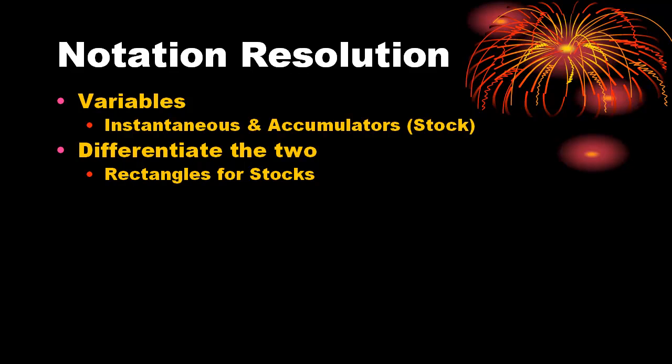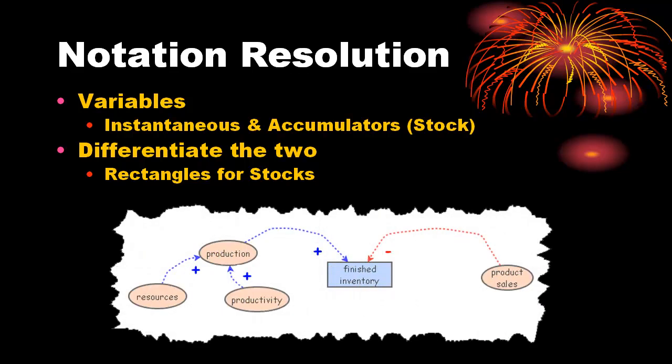In this diagram, we use a rectangle to indicate an accumulator or stock. Finished inventory increases with production and decreases with product sales, though it happens over time. Changing resources or productivity immediately changes production.